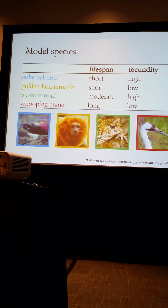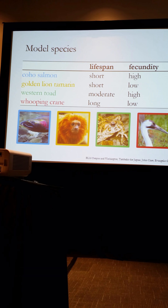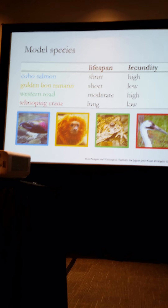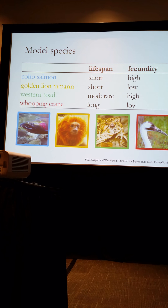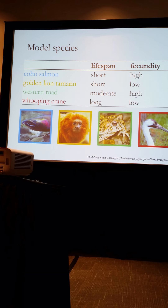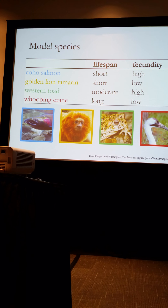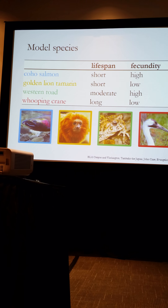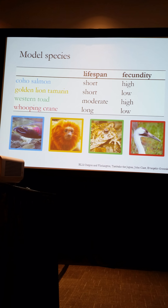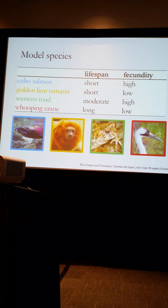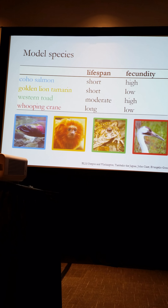We parameterized this model using four model species that have been used in captive breeding and release programs, chosen to cover a wide variety of life history characteristics. We used coho salmon to represent a species with a short lifespan and high fecundity, and the golden lion tamarin, which also has a short lifespan but lower fecundity. We used western toad to represent a moderate lifespan with high fecundity, and finally the whooping crane, which has a long lifespan but lower fecundity.